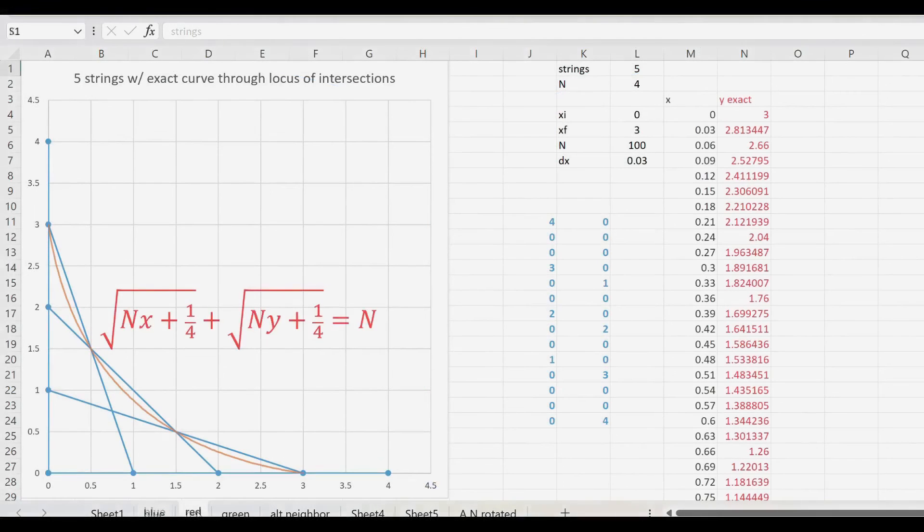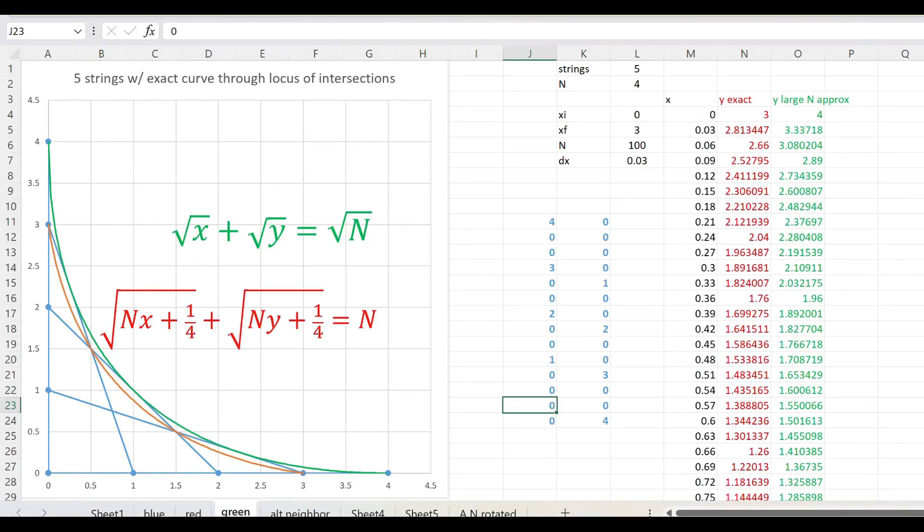So let's plot some strings. Notice that the exact formula passes through all our crossing points. However, our large n result does not. And yet we see something curious. It appears that our large n approximation does not pass through our neighboring crossing points because it is tangent to all those strings. And in this case looks are not deceiving. That's a second challenge for you. Prove that this is the case and be the first to leave a comment.